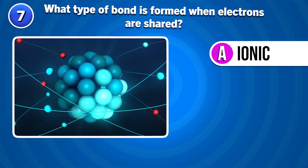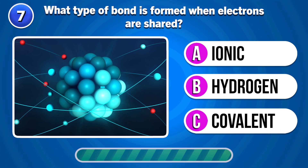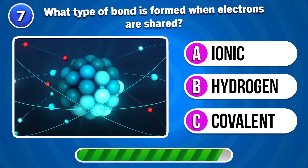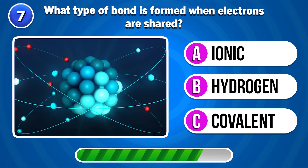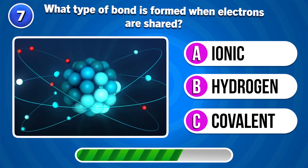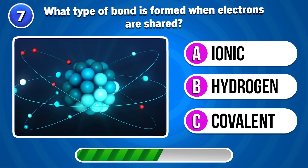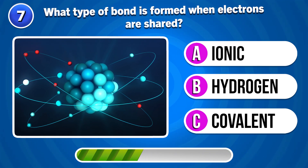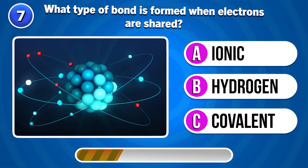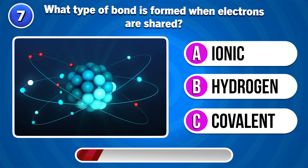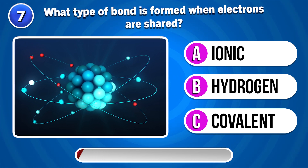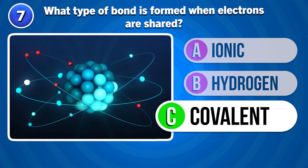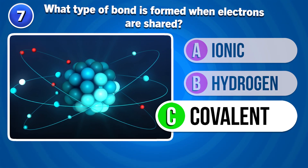What type of bond is formed when electrons are shared? Covalent bond.